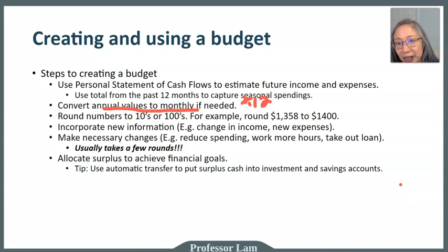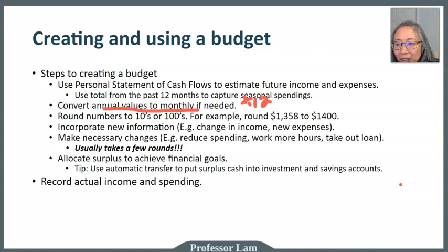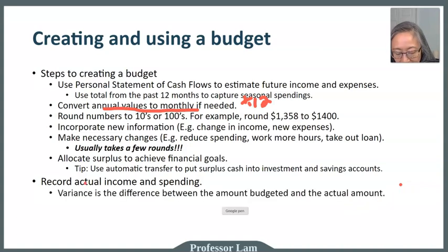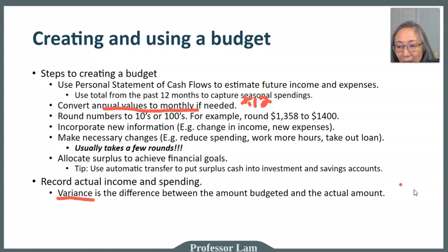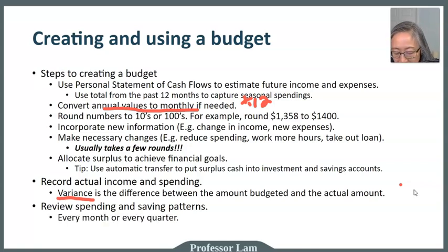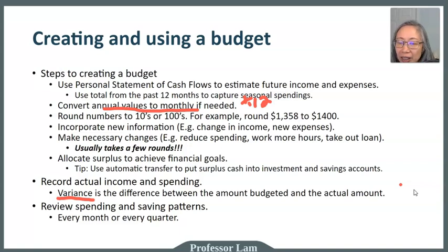Your budget is just a plan and it may or may not go according to plan when real life happens. So it's important to record your actual income and expenses so that you can compare them against the plan — in personal finance we call that variance. The variance is the difference between what you planned, meaning the budgeted amount, versus your actual income and expenses. After recording that for a while, you want to review it every month, every quarter, or at least every year, to see how closely you're able to stick to your budget and whether you need to make additional adjustments.